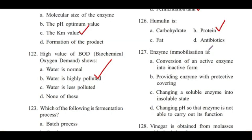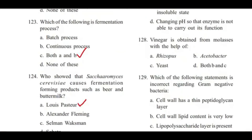Question 127: Enzyme immobilization is — conversion of an active enzyme into inactive form, providing enzyme with protective covering, changing a soluble enzyme into insoluble state, or changing pH so that enzyme cannot carry out its function? Answer is B, providing enzyme with protective covering.